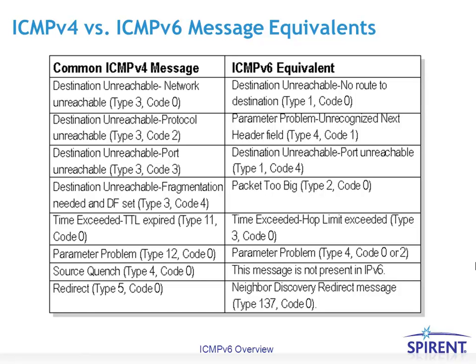The type and code values differ between ICMPv4 and ICMPv6. For example, both have a destination unreachable message type, but with ICMPv4 the network unreachable message is type 3, code 0, whereas with IPv6 it's referred to as no route to destination and has type 1, code 0. The intention is not for you to memorize all these values — you can look them up in RFC 4443 — but to understand the similarities and differences between equivalent message types in ICMPv4 and ICMPv6.